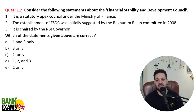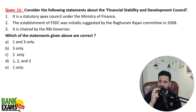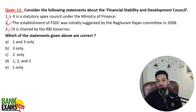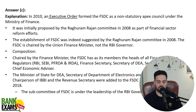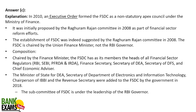Consider the following statements regarding the Financial Stability and Development Council. What is the Financial Stability and Development Council? It is non-statutory — not a statutory APEX Council. Its establishment was recommended by the Raghuram Rajan Committee, which is correct. It is chaired by the Finance Minister — not the RBI Governor, which would be false. So only the second point is correct. This is very important for the examination. Pause the video and you can read it.